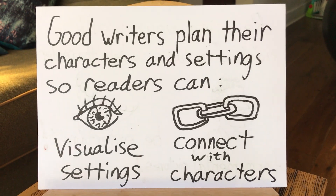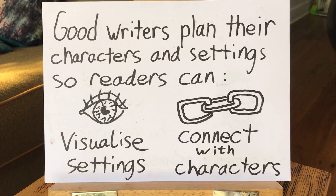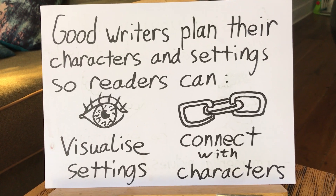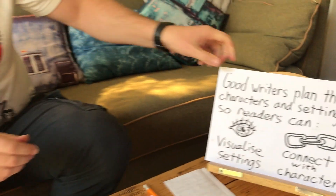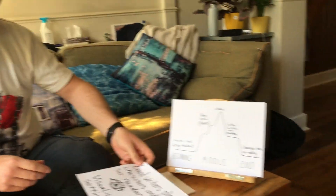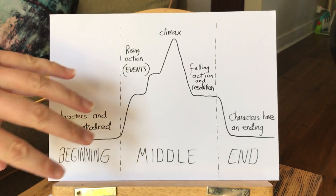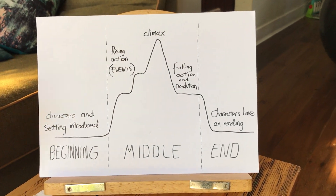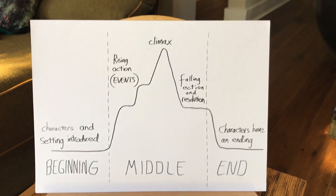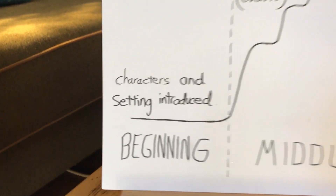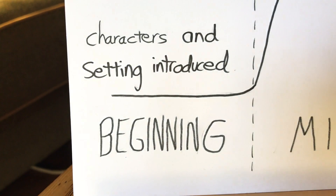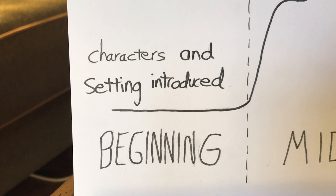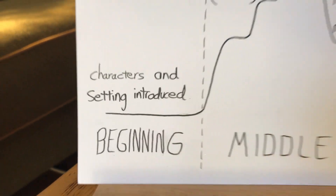So readers can visualize settings and connect with their characters. You should all remember the story mountain — the beginning, middle, and lots that happens in the middle. We're going to go into the middle and the end in future writing workshops, but for today we're just going to concentrate on characters and the setting.